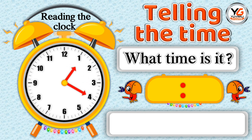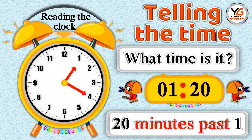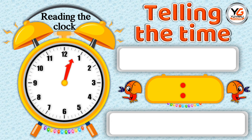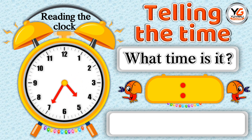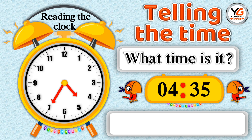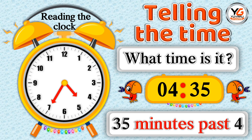What time is it? 1.20 — means 20 minutes past 1. What time is it? 4.35 — means 35 minutes past 4.